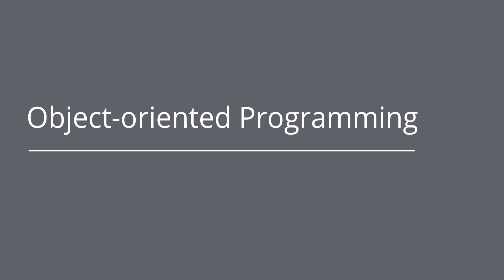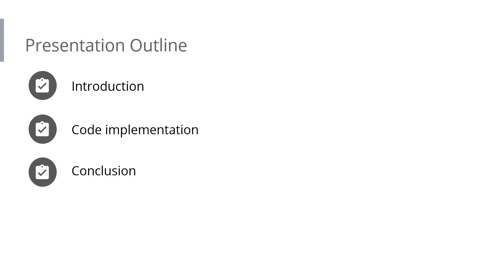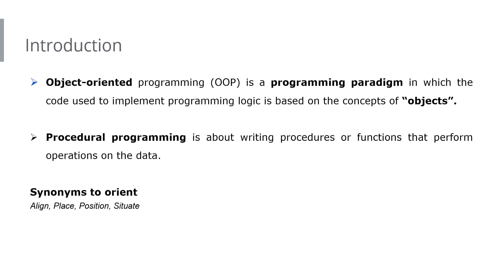I want you to pay attention here because there's a concept that applies to a lot of modern programming languages, so most of what we say here will apply to almost every programming language around today. In this presentation I'll start with an introduction, then look at some code implementation of object-oriented programming, and then some conclusions. Object-oriented programming, commonly referred to as OOP, is a programming paradigm in which the code used to implement programming logic is based on the concept of objects.